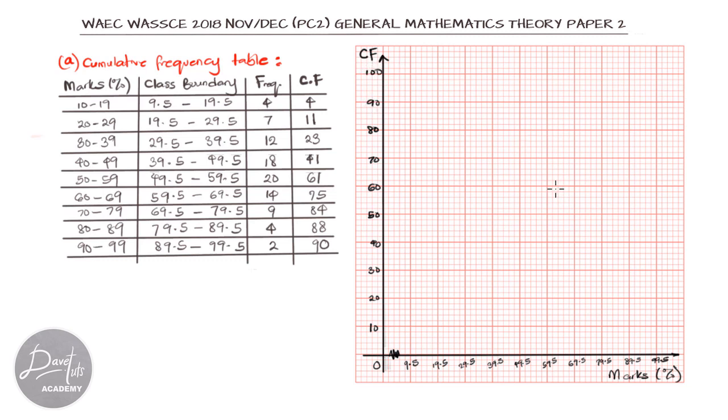What we need to plot is the values of the upper class boundary against the value of the corresponding cumulative frequency. That means we'll start our first entry with 19.5, the first upper class boundary, and then the cumulative frequency is 4. So we'll have 4 on the vertical and 19.5 on the horizontal. In the same principle, we can trace each of the entries.